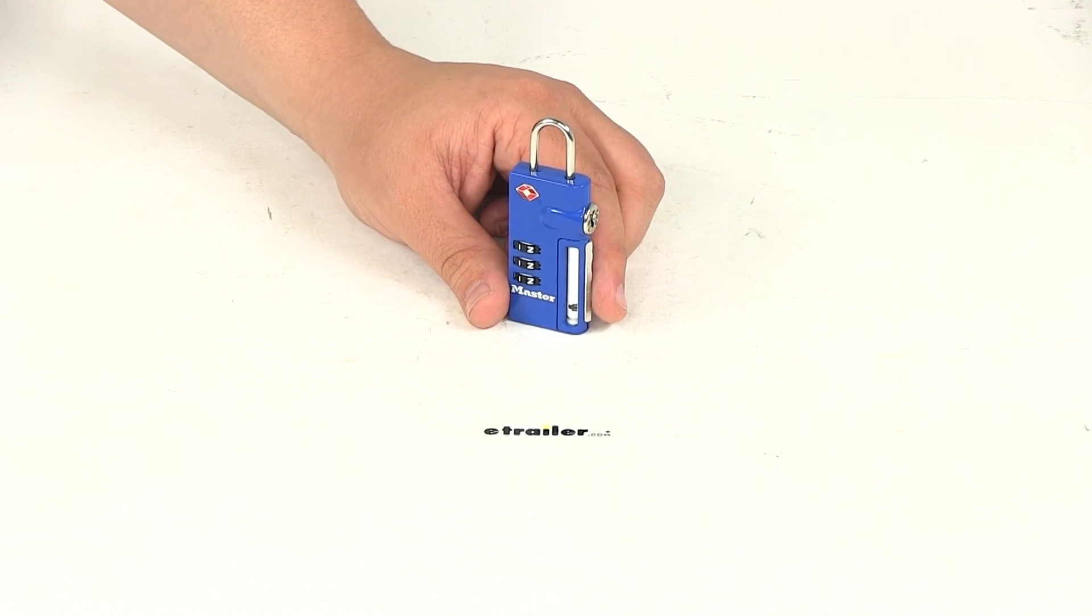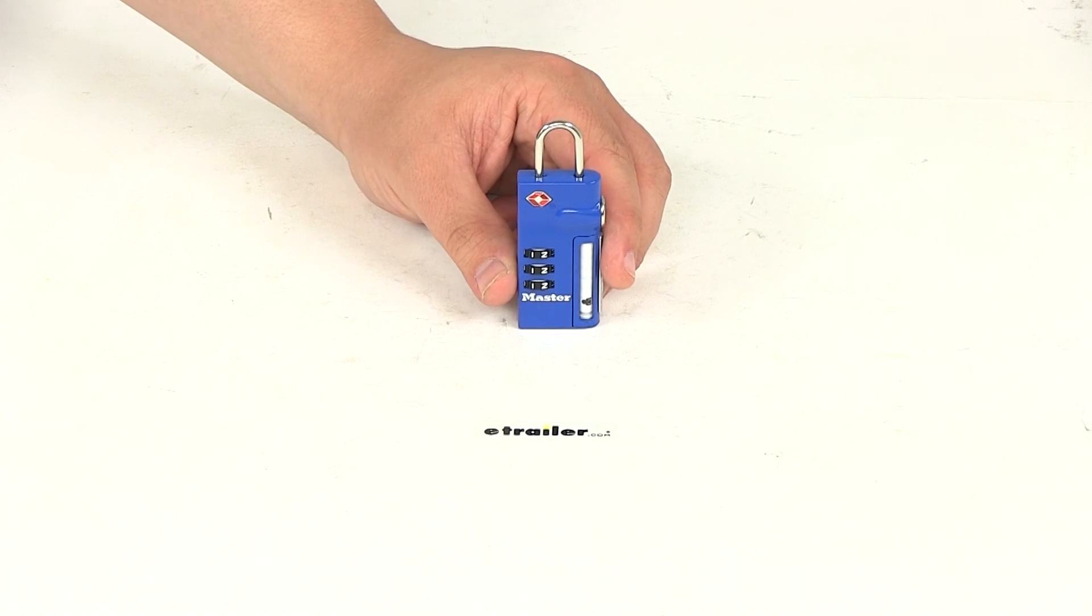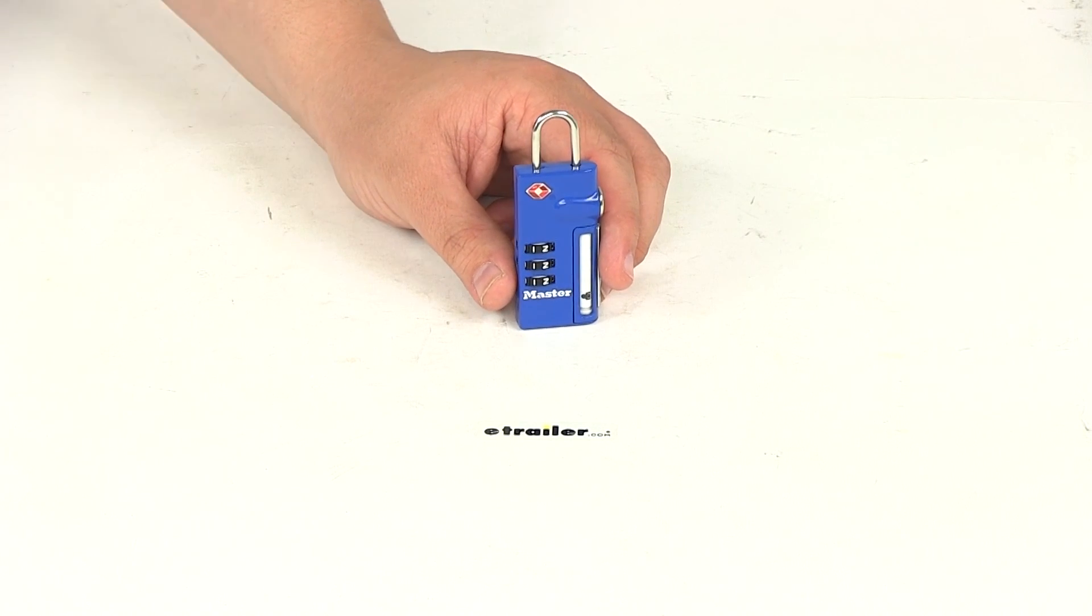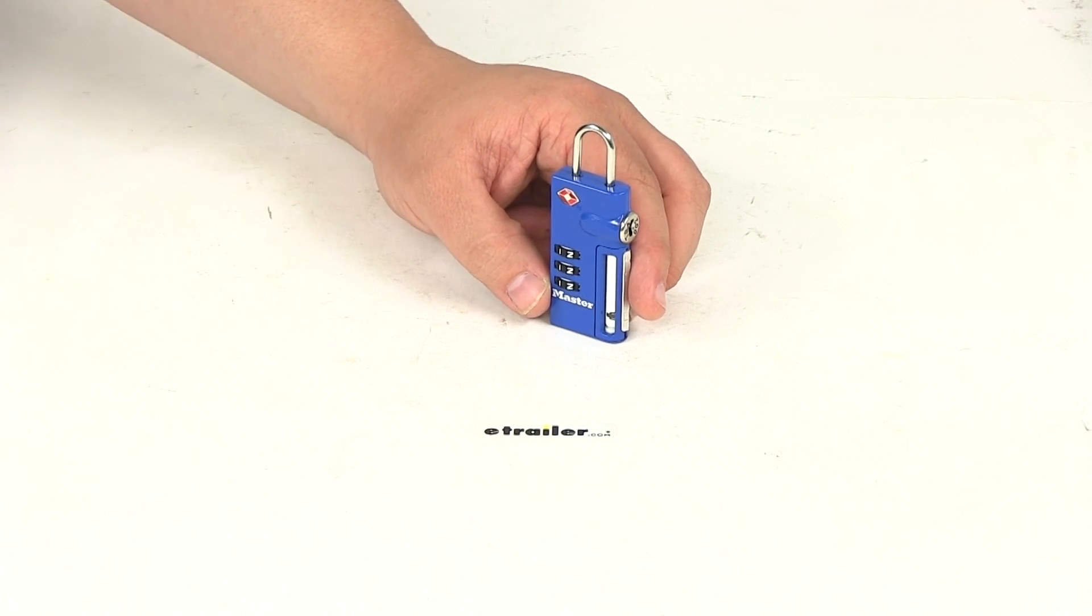Today we're going to be taking a look at part number ML4693D. This is the Master Lock combination padlock. It's TSA accepted. This padlock is going to secure your luggage to help prevent theft.